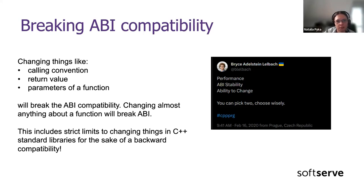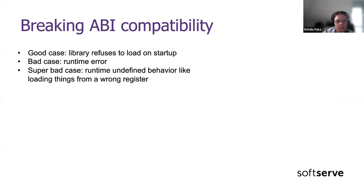Unfortunately, the same limit applies to C++ standard libraries. If C++ really wants to be ABI-compatible by all means necessary, introducing new things is pretty risky. There were several incidents where ABI compatibility was broken, which I will tell about in a moment.